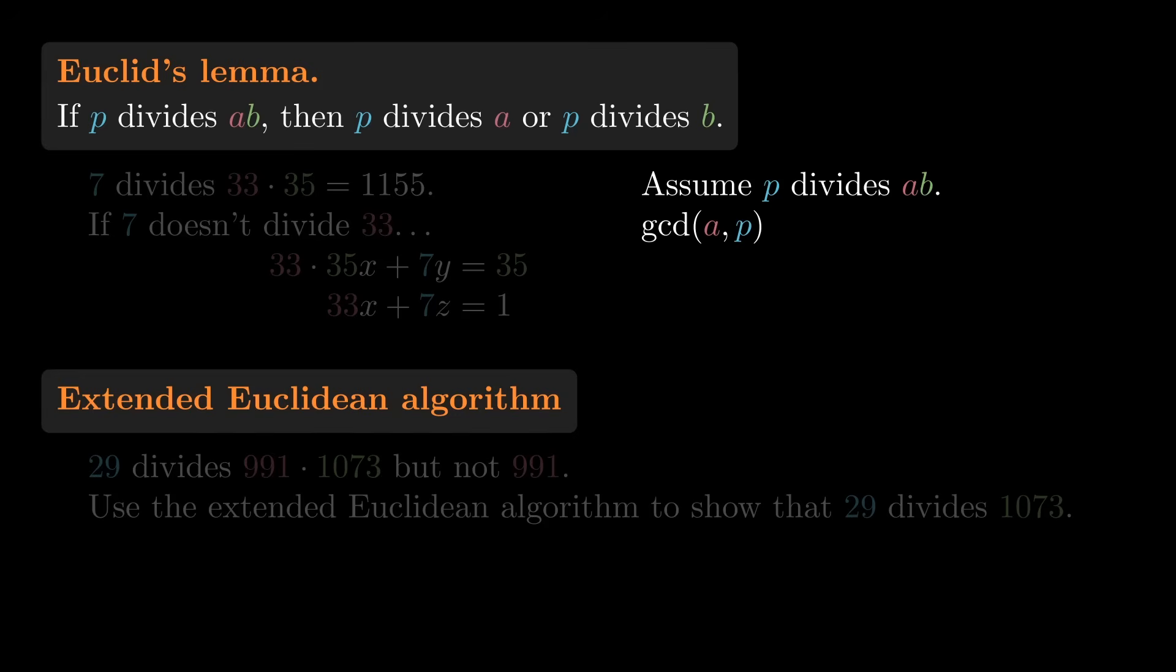The GCD is 1 or P. If it's P, then P divides A, and we're done.